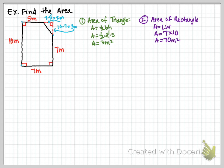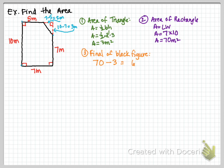Remember, that rectangle is only a rectangle because we added in that corner triangle. To get the actual shape, we take the rectangle area of 70 square meters and subtract the triangle we added on. That gives us 67 square meters as the area of the original shape.